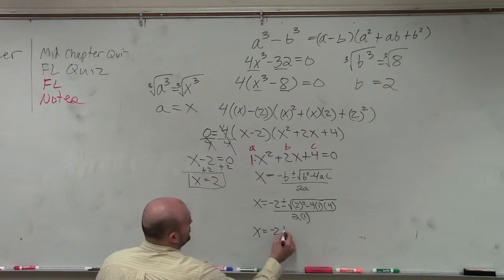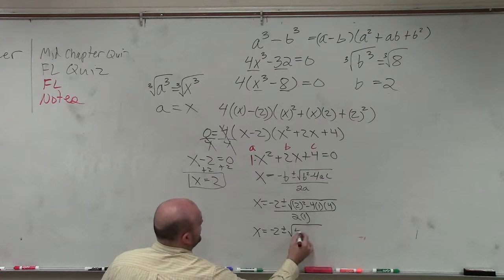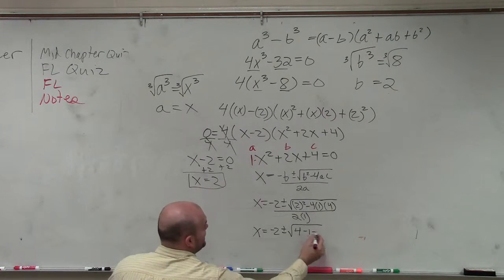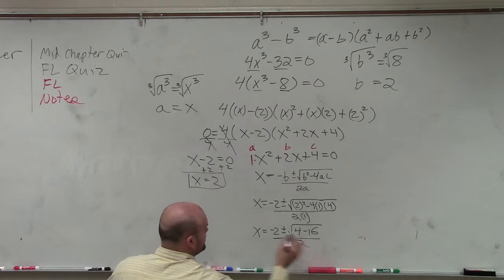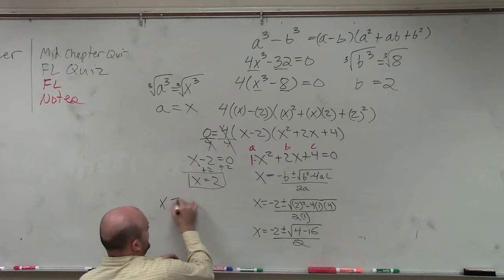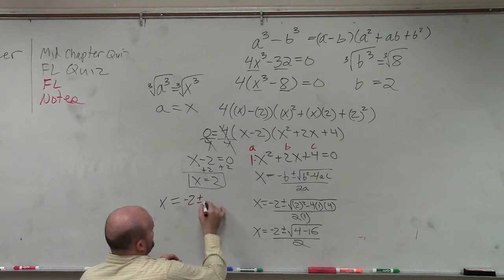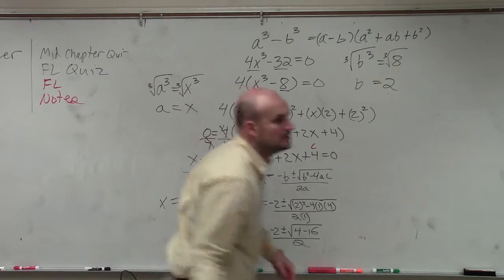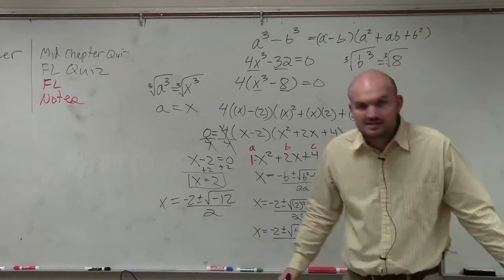So therefore, when I simplify, I get negative 2 plus or minus 2 squared is 4. Negative 4 times positive 4 is going to be negative 16 all over 2. Simplify that over here. x equals negative 2 plus or minus the square root of negative 12 over 2. 4 minus 16 is negative 12.